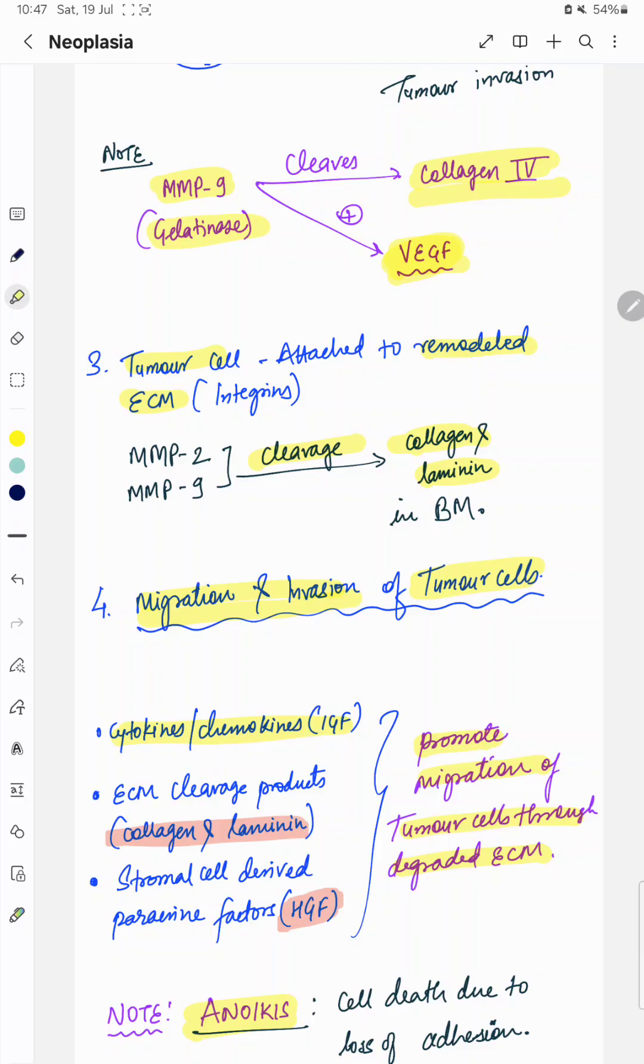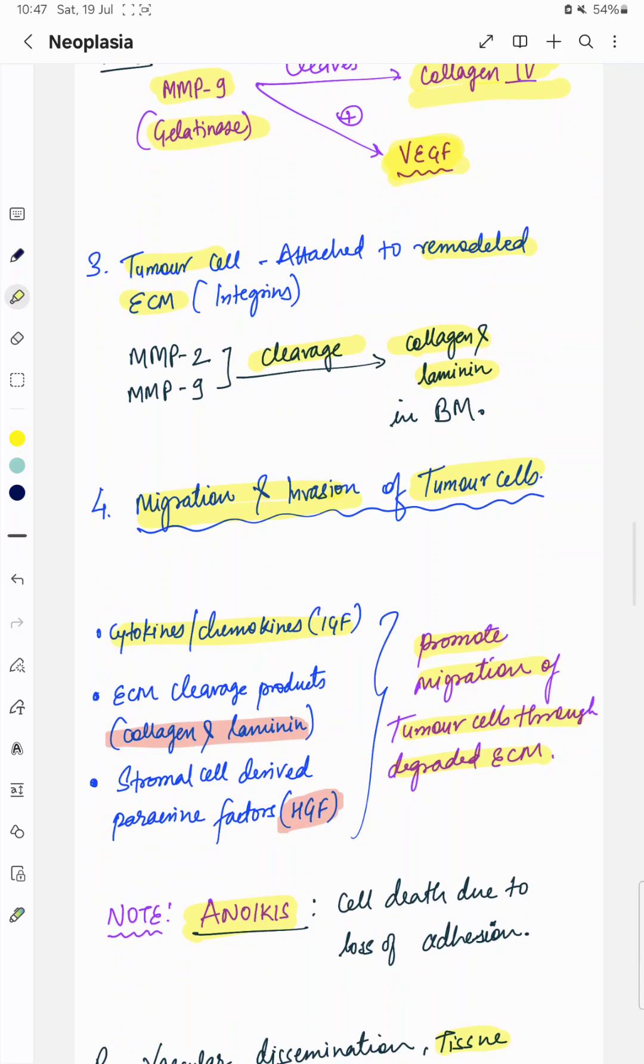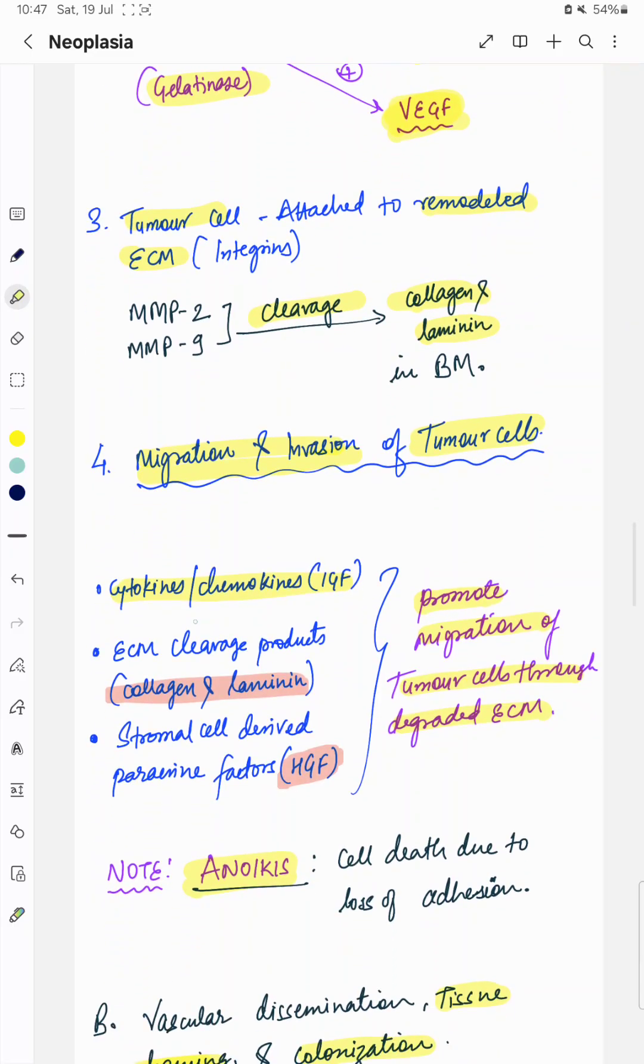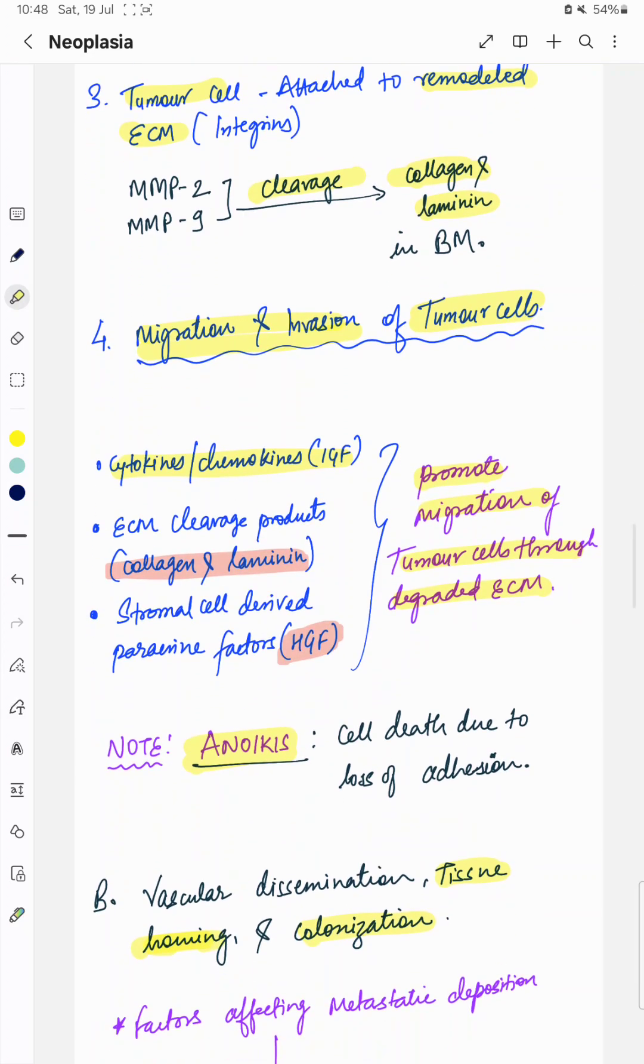How migration and invasion of tumor cells occur from primary tumor to blood vessels through extracellular matrix? Various factors like cytokines, chemokines, extracellular matrix cleavage products like collagen, laminin, stromal cell-derived paracrine factors like HGF promote migration of tumor cells through degraded extracellular matrix.